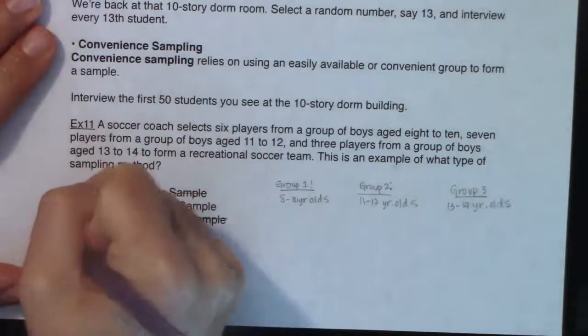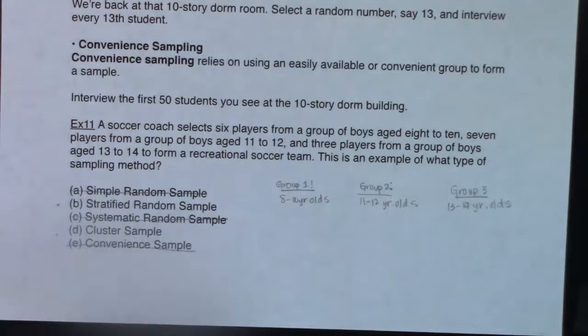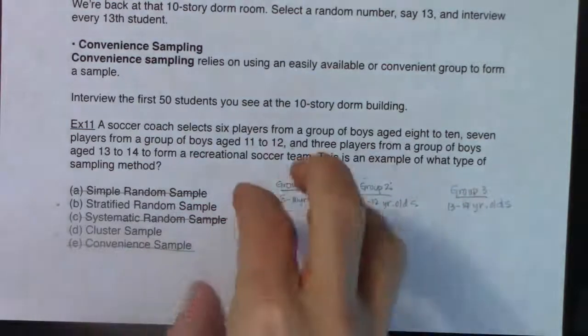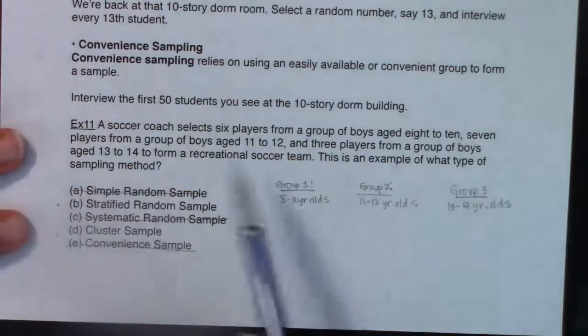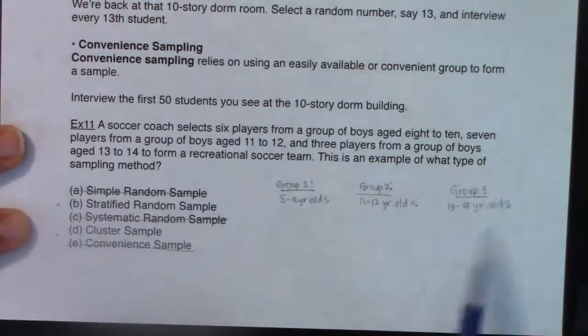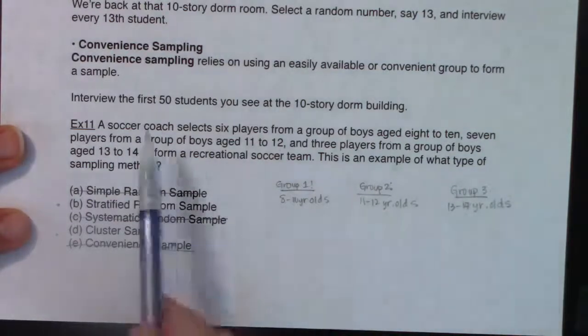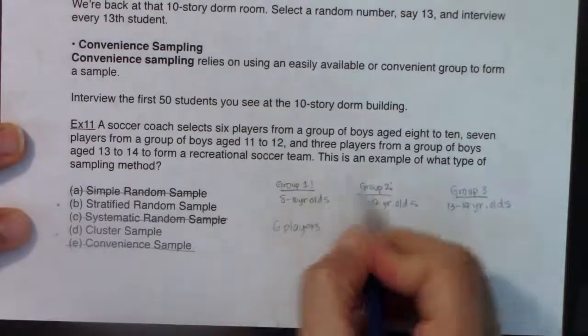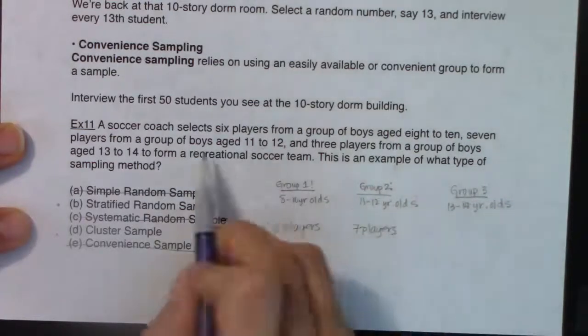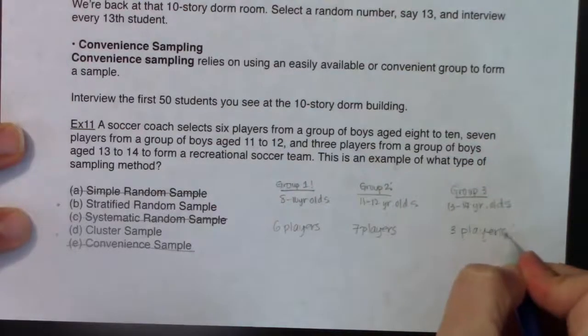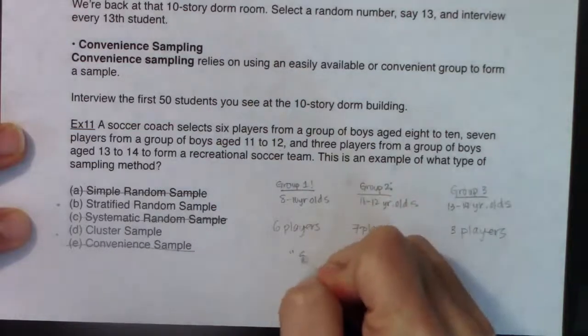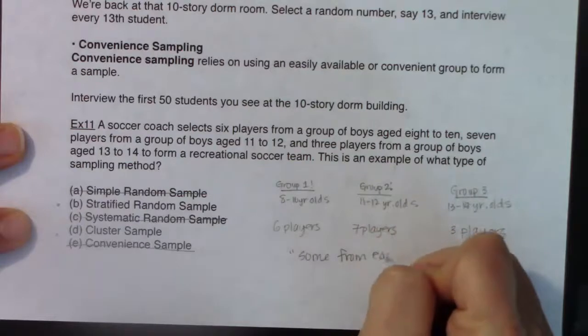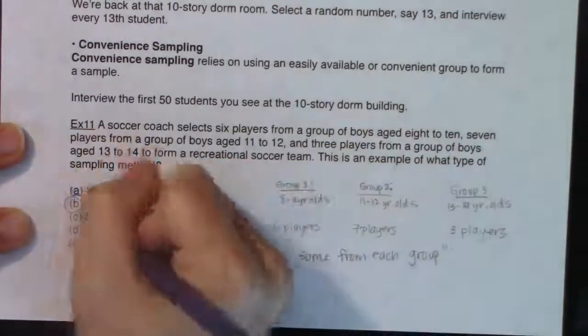As soon as you start to group ahead of time, you are not a simple random sample. And if you're grouping ahead of time, you are not a convenient sample. You're not taking the first 10 kids that showed up to your doorstep. And looking at this language, it doesn't say anything about selecting every kth person, so this is not systematic either. We get down to our favorite two: was it stratified or clustering? They both involve groups, but it's what you do with those groups that decides. Did this soccer coach take some from each group or did he or she just take one entire group? The coach selects six players from this group, seven players from the middle-aged kids, and three players from the older-aged kids. So I took some from each group, and when we take some from each, we are stratifying.